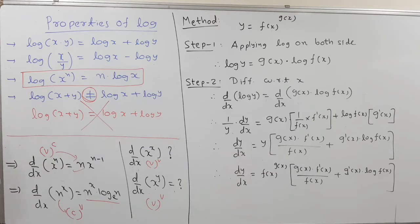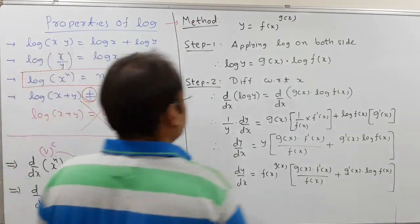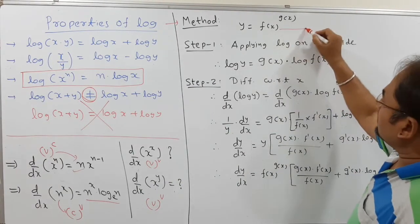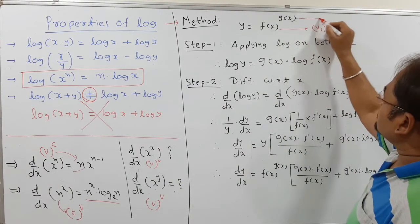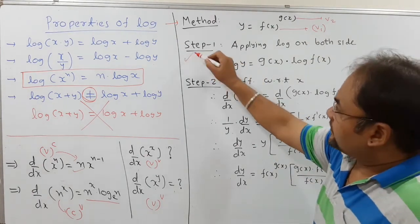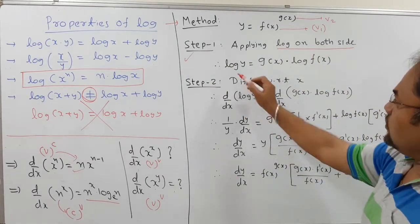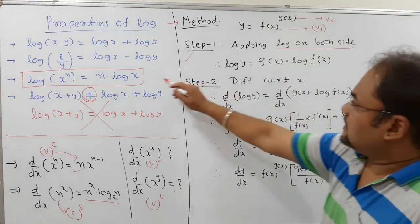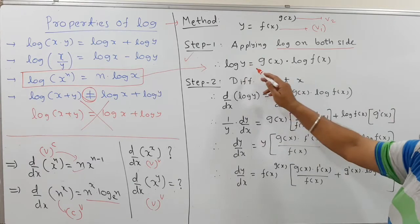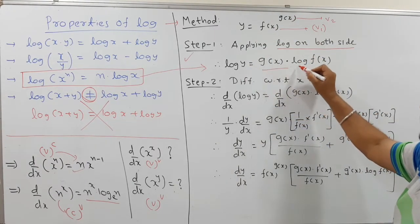For variable raised to variable form, we must follow a specific method. Given y = f(x)^g(x), where both f(x) and g(x) are variable, Step 1 is to apply logarithm on both sides: log y = g(x) · log f(x), using the power property that brings the exponent down as a multiplier.